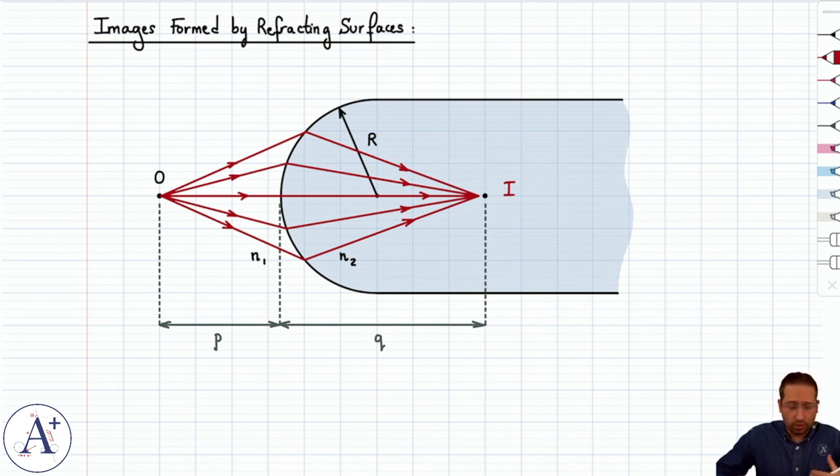So the relationship between all of these quantities is that n1 divided by p plus n2 divided by q is equal to n2 minus n1 divided by r.